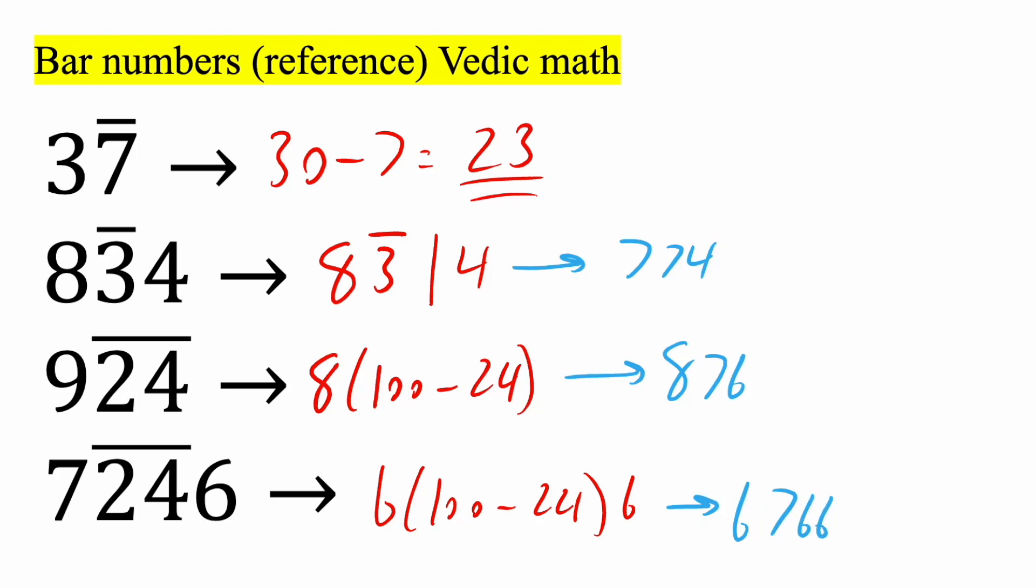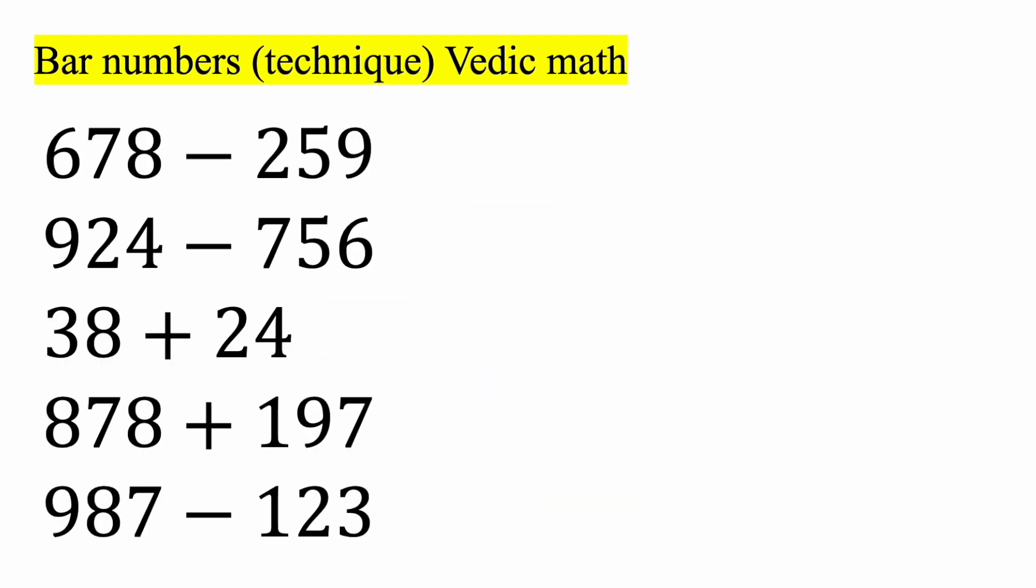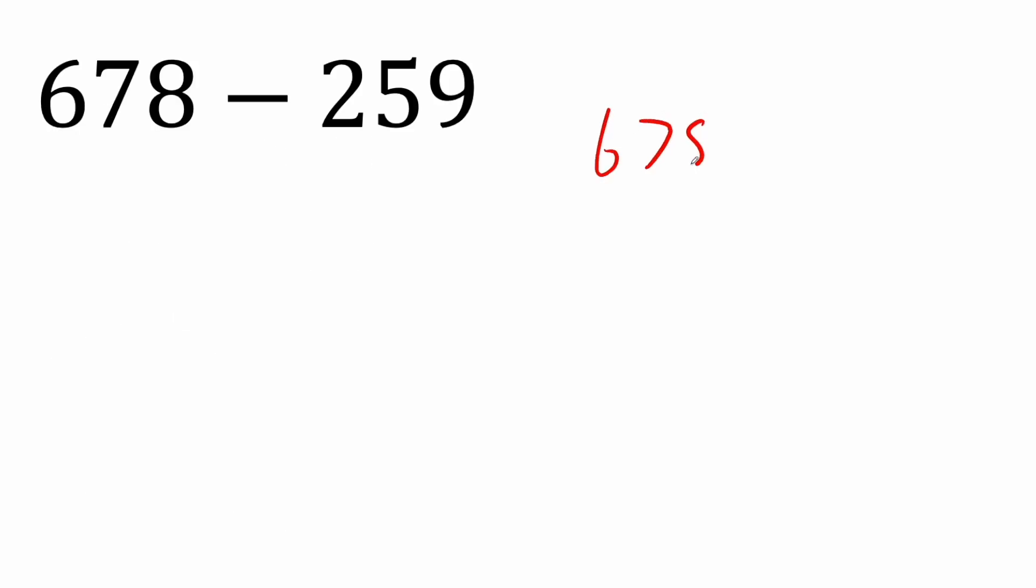Now next, I'm going to show you why this can be useful in Vedic math. And we're going to see where it's useful by solving these five problems. So let's rewrite this. We have 678 minus 259.